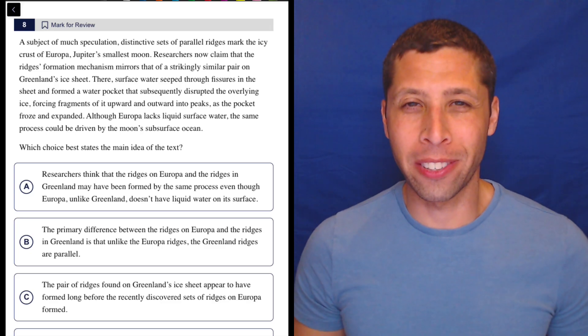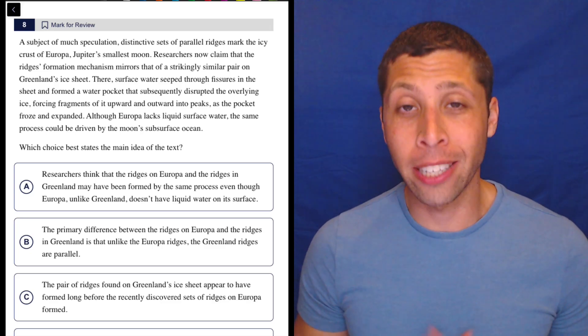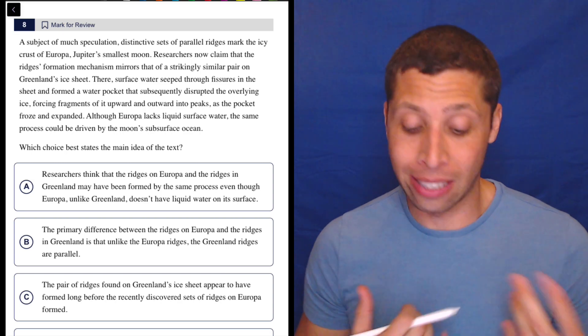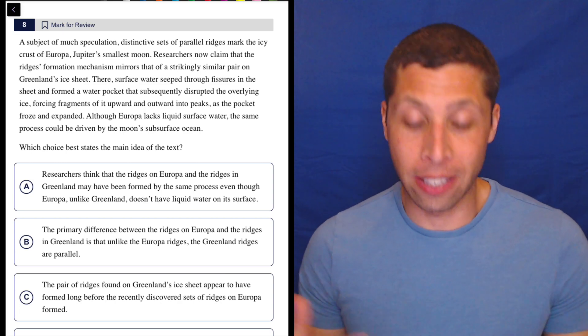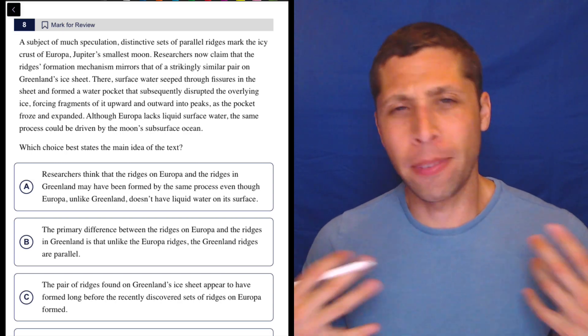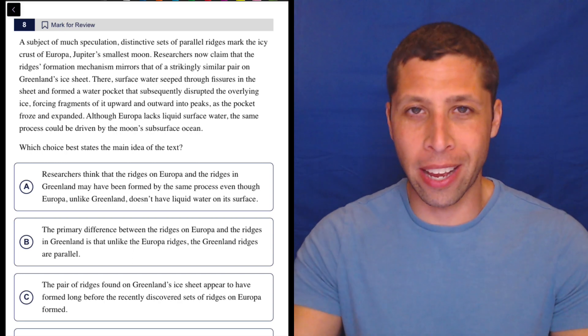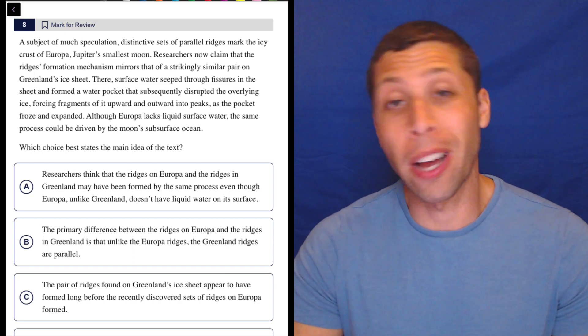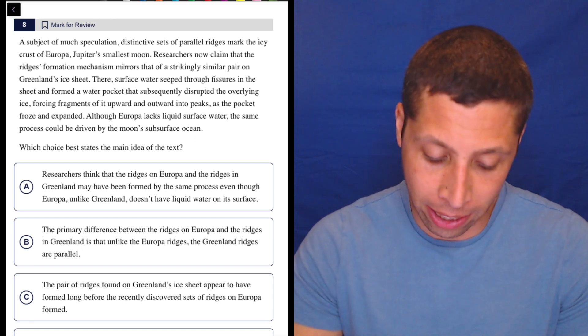You might be able to tell from the answer choices that this one is starting to get a little bit more complicated. There's a lot of text in there. Clearly, it's a science passage. We can see that it's talking about Jupiter. So don't panic, but let's see what it says, and let's remember that this is just about the main idea. So dumb summaries are probably going to help us out. Let's take a look.